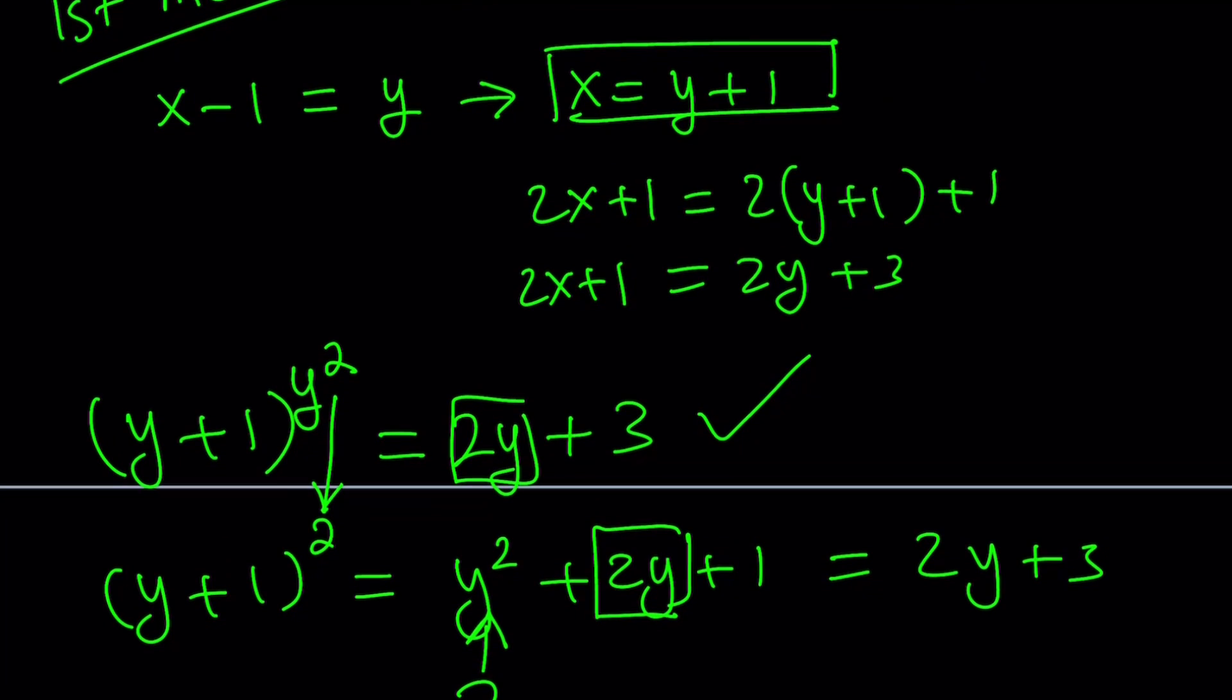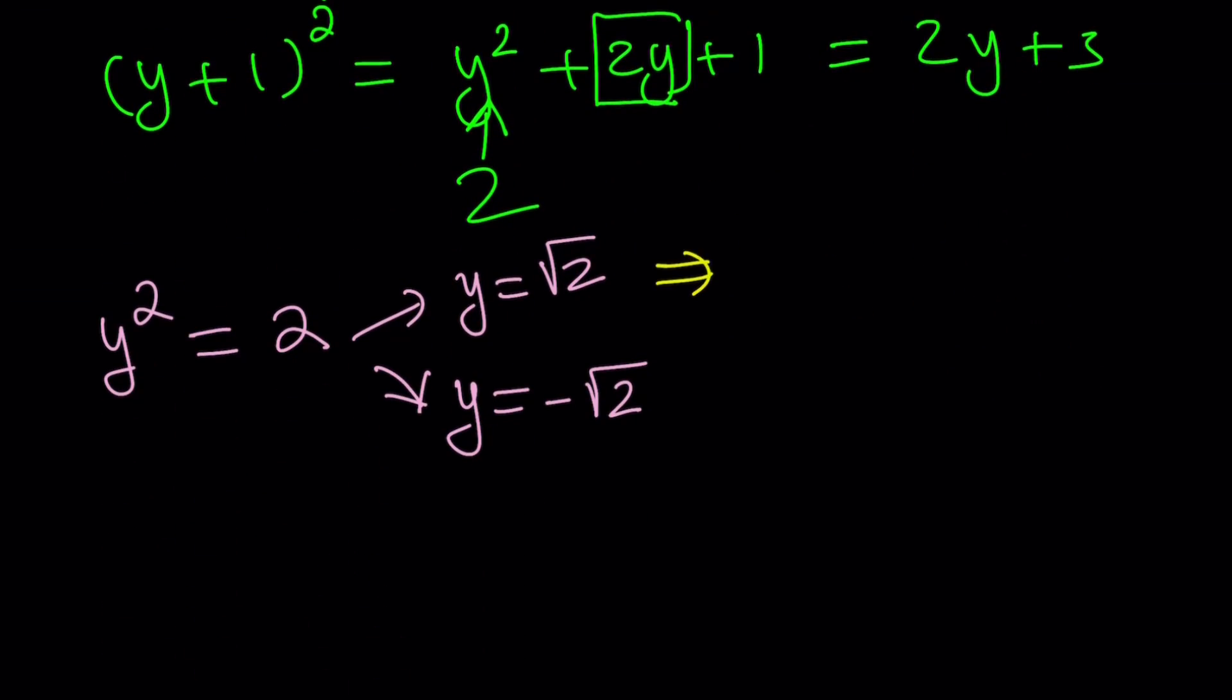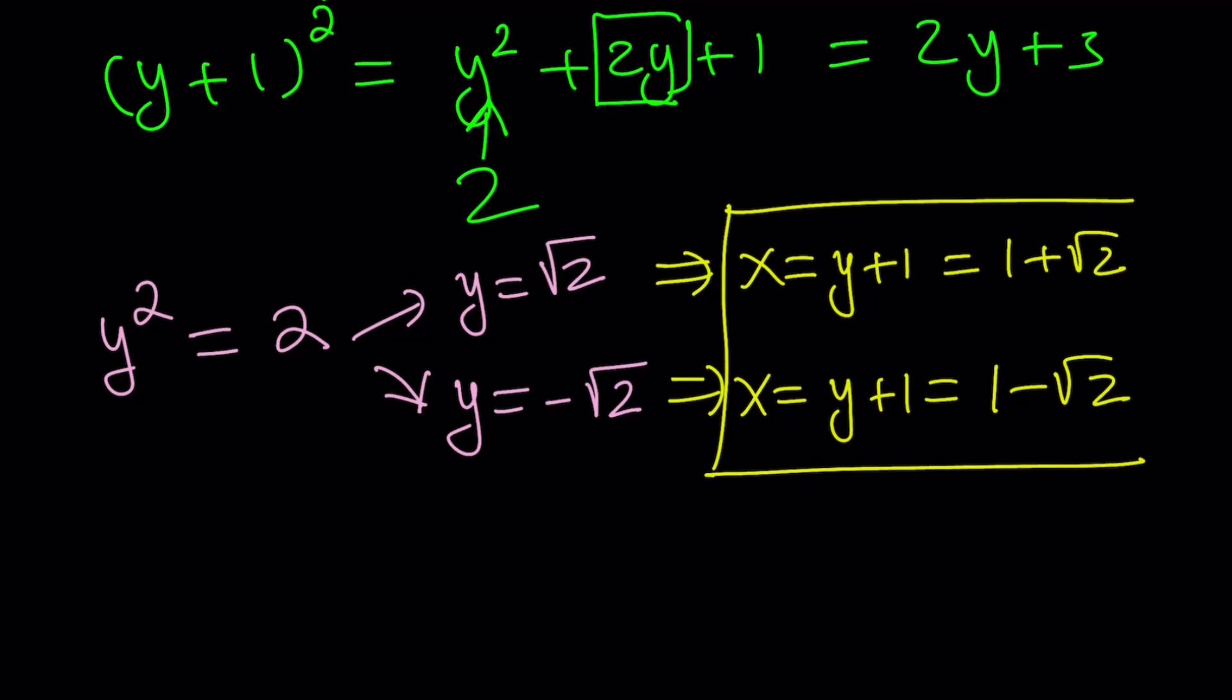So let's find the x values by adding 1 to both sides. x = y+1, which is 1+√2. I like to add from the left because the second y value is negative. And x = y+1 again, which is 1-√2. So I got two x values and they should both be fine.